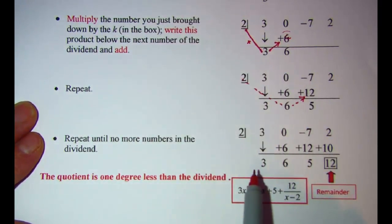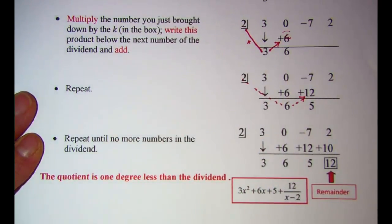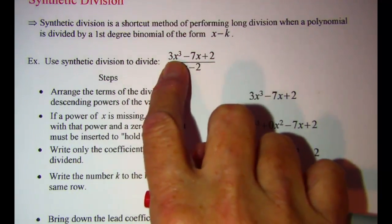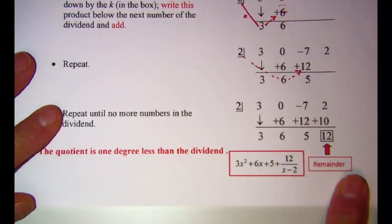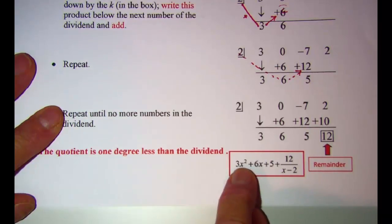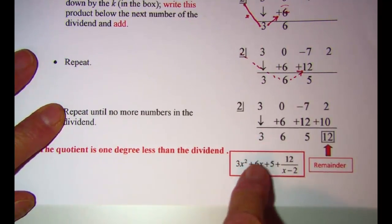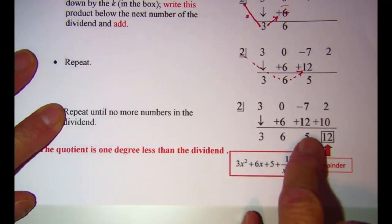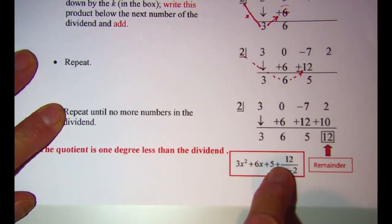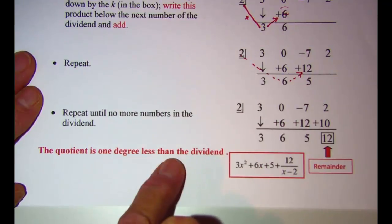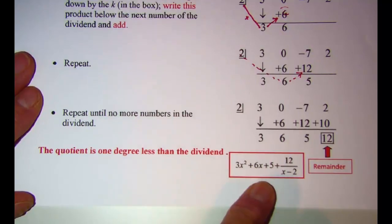The quotient — the answer to the division problem — since the original dividend was a third degree polynomial, the quotient will be second degree; it is always one less on the exponents. So I write 3x squared, plus 6x, plus 5 as the constant, and then plus 12 over the divisor x minus 2. One thing to remember: your quotient is always 1 degree less than the degree of the dividend.